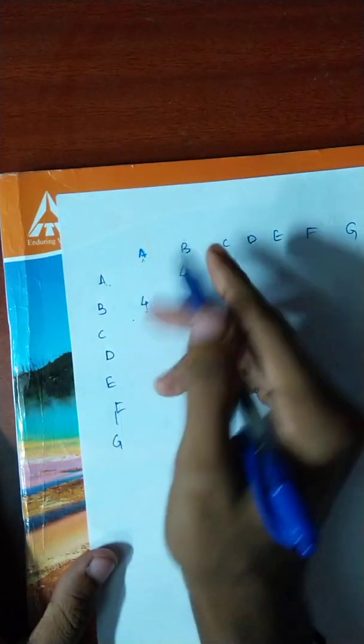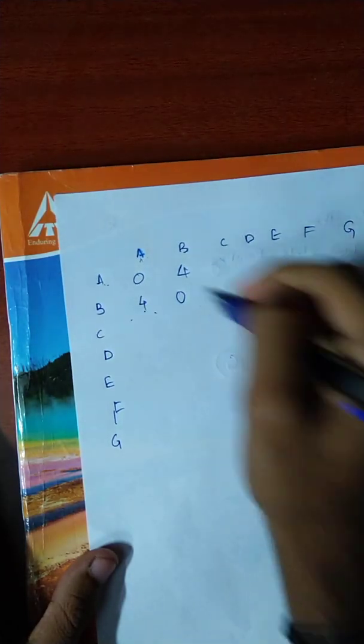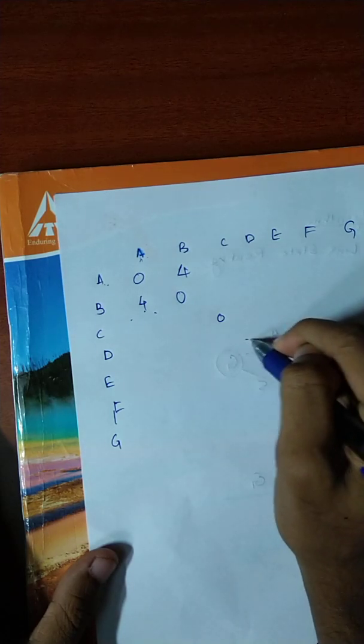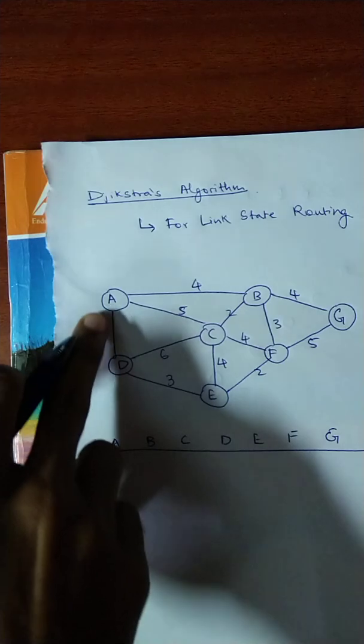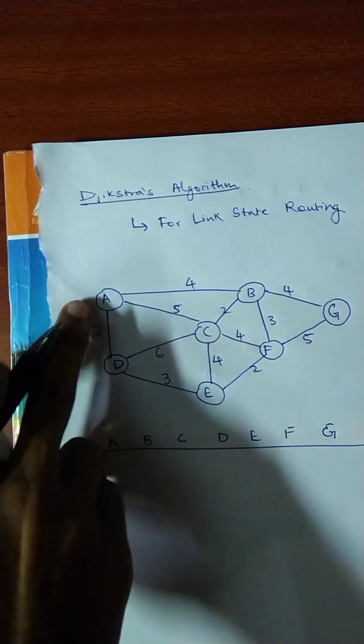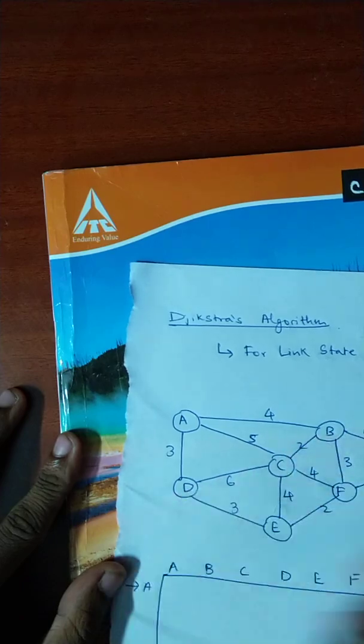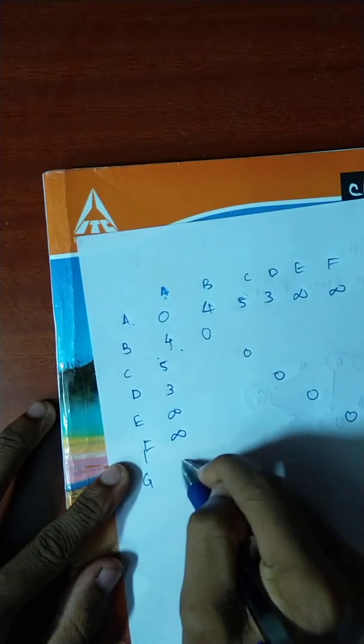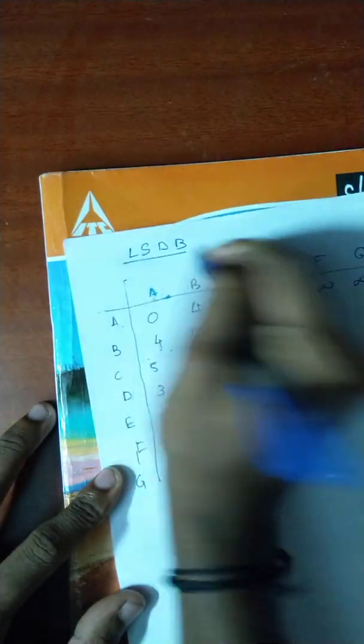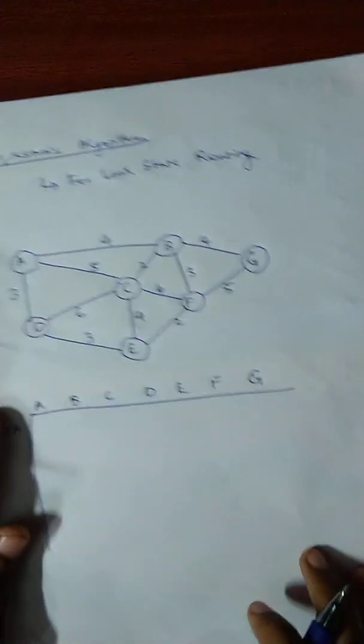Wherever you see two of the same node — two A's, two B's — you fill it with zero, so the whole diagonal matrix gets filled with zero. When there's no link between two points — for example no link between A and E, A and F, or A and G — you fill those places with infinity. Node A is linked with B, C, and D, so we fill in values 4, 5, and 3 accordingly. Once this link state database is complete it will be helpful for calculating the shortest path.